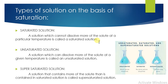A solution which can dissolve more solute is called an unsaturated solution. For example, if you are adding sugar to water — you dissolve one tablespoon, then two, then three — as long as it keeps dissolving, it is an unsaturated solution. It remains unsaturated as long as it can dissolve more solute. Once it stops dissolving, it becomes a saturated solution.